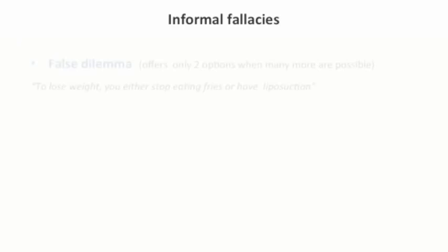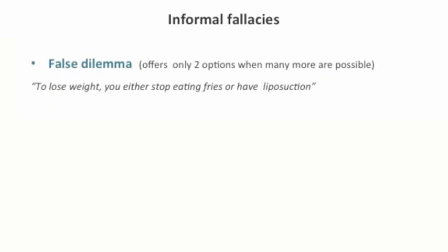There are many varieties of informal fallacies. Here are some of the most common examples. The false dilemma fallacy occurs when an argument offers only two conclusions when many more are possible. For instance: 'To lose weight, you should either stop eating fries or have liposuction.' This is a fallacy, as many other options are possible, such as taking up exercise.